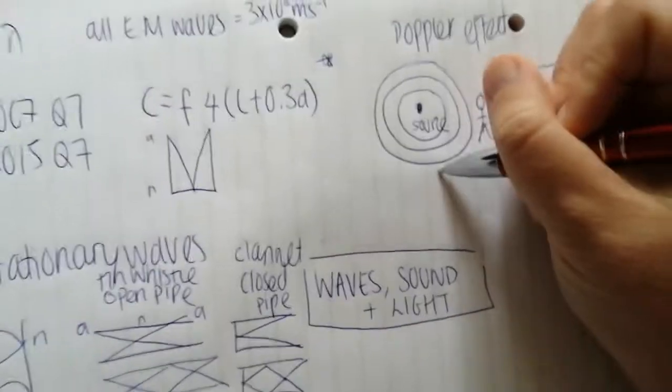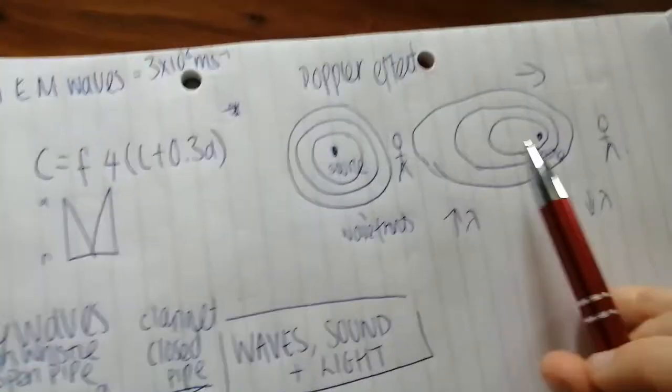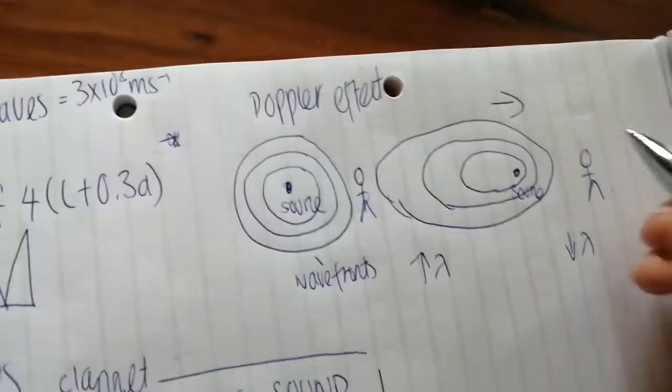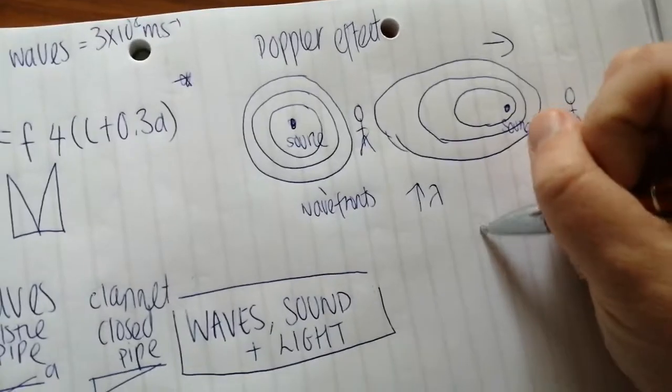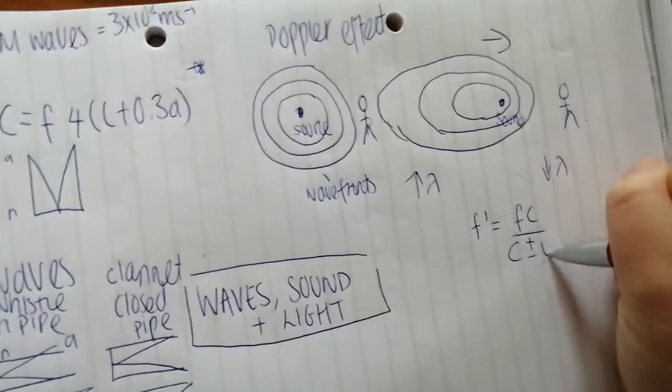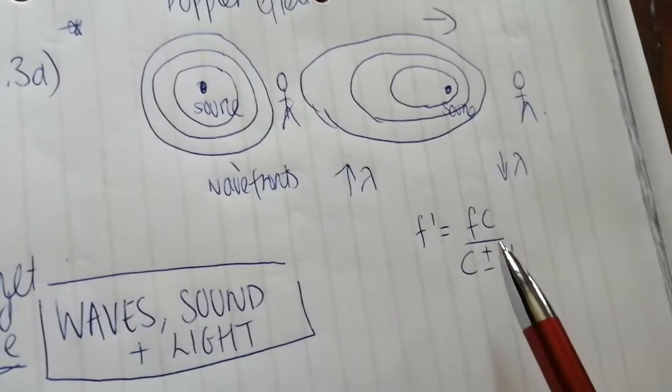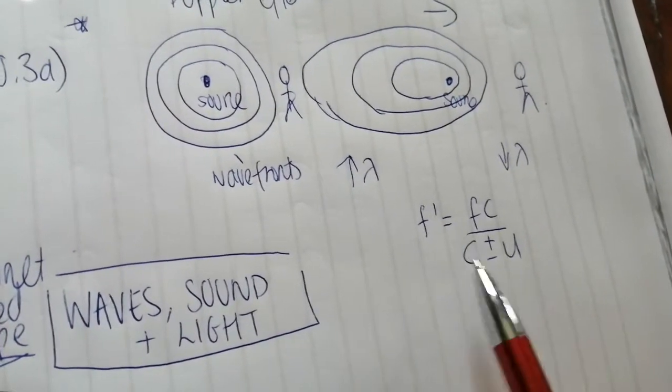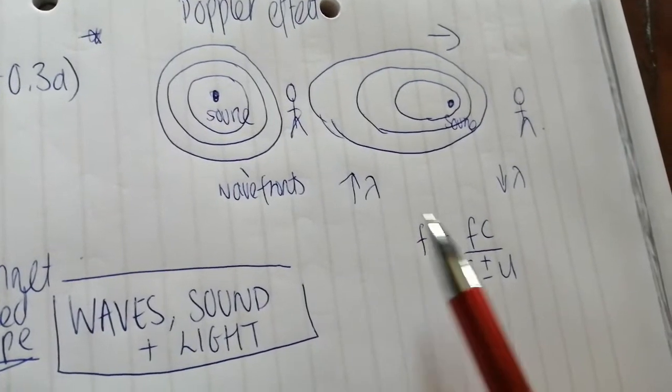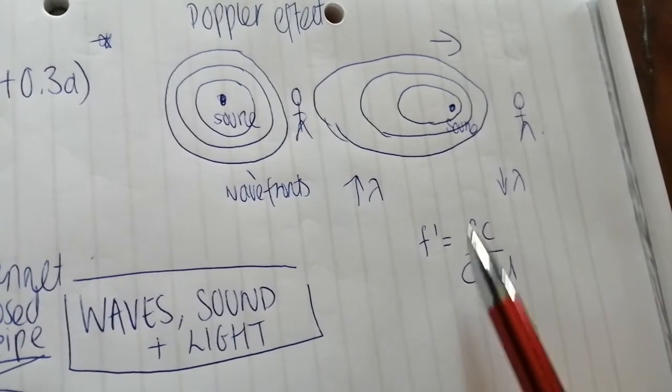Now, label your wave fronts, label your source, make sure you show the direction that the source is moving. Now, and there's one formula for this, which is in your log tables. But there's two different versions of it depending on whether the object is moving towards you or away from you. So a lot of the time people get confused what these different things mean. So let's just run through that fairly quickly. This is the apparent frequency, or the observed frequency, what you think you hear. This is the actual frequency of the sound wave.